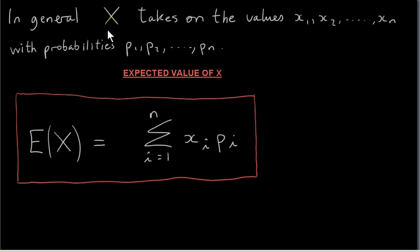From a previous video, we know that the discrete random variable X takes on the set of values we call them x₁ to xₙ with respective probabilities p₁ to pₙ. To calculate the expected value of X, we multiply each value xᵢ by its corresponding probability pᵢ and sum these products from 1 to n. This symbol here is the Greek letter Sigma. It is an uppercase Sigma in the Greek alphabet. It is used to denote the sum of a quantity.